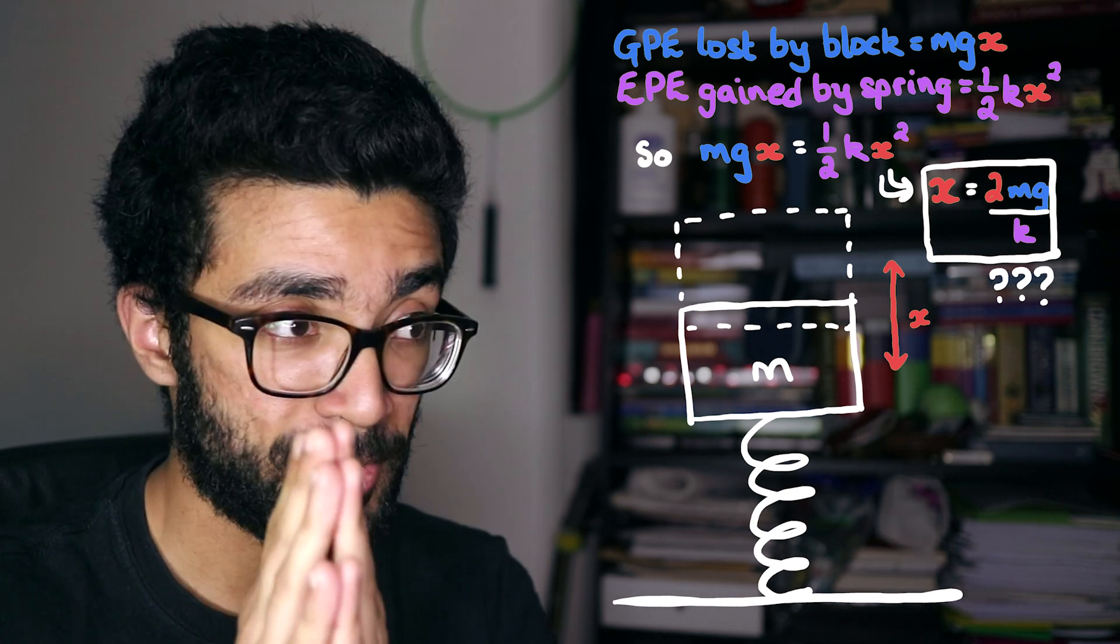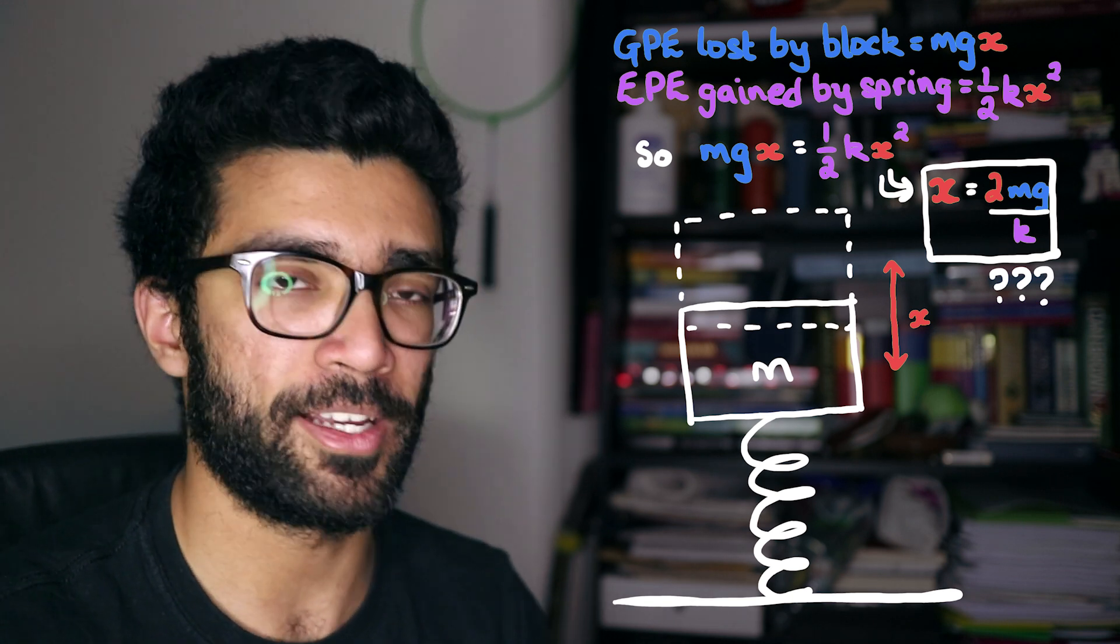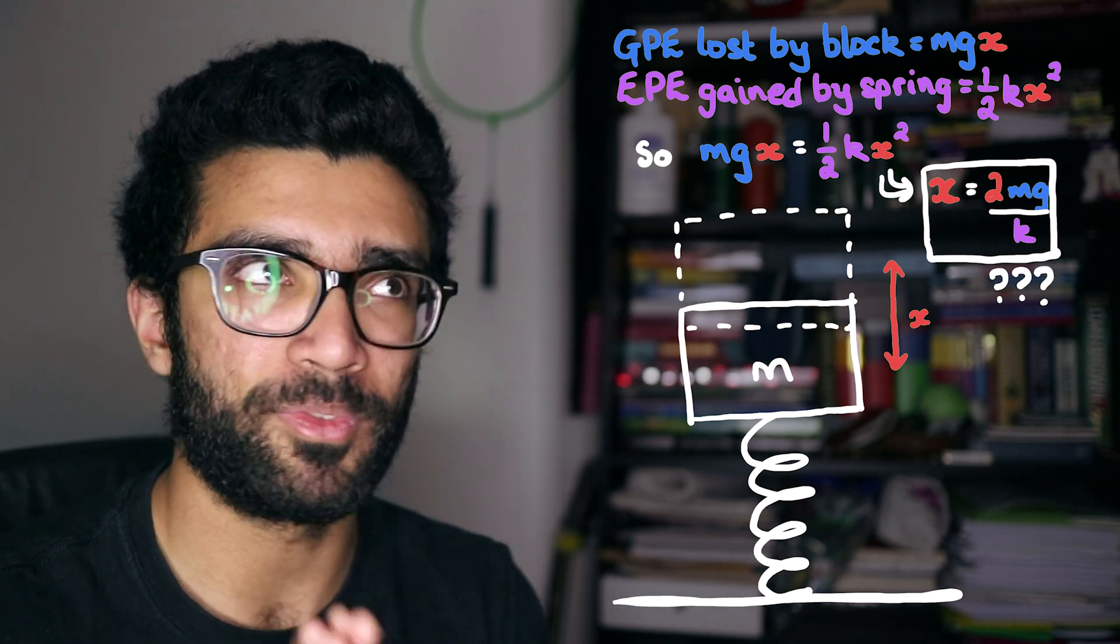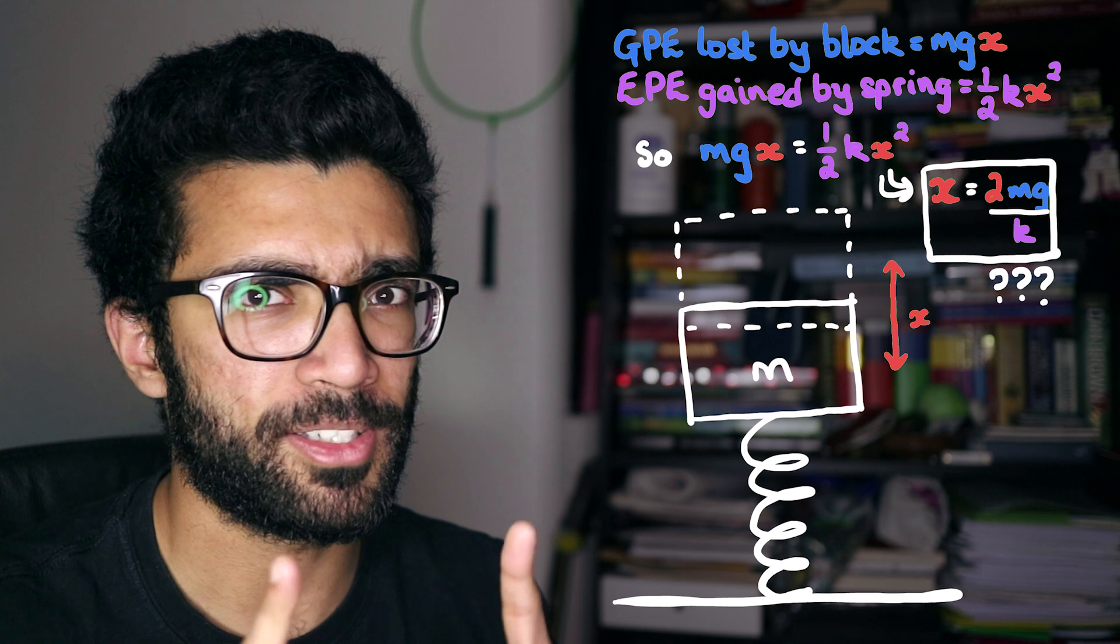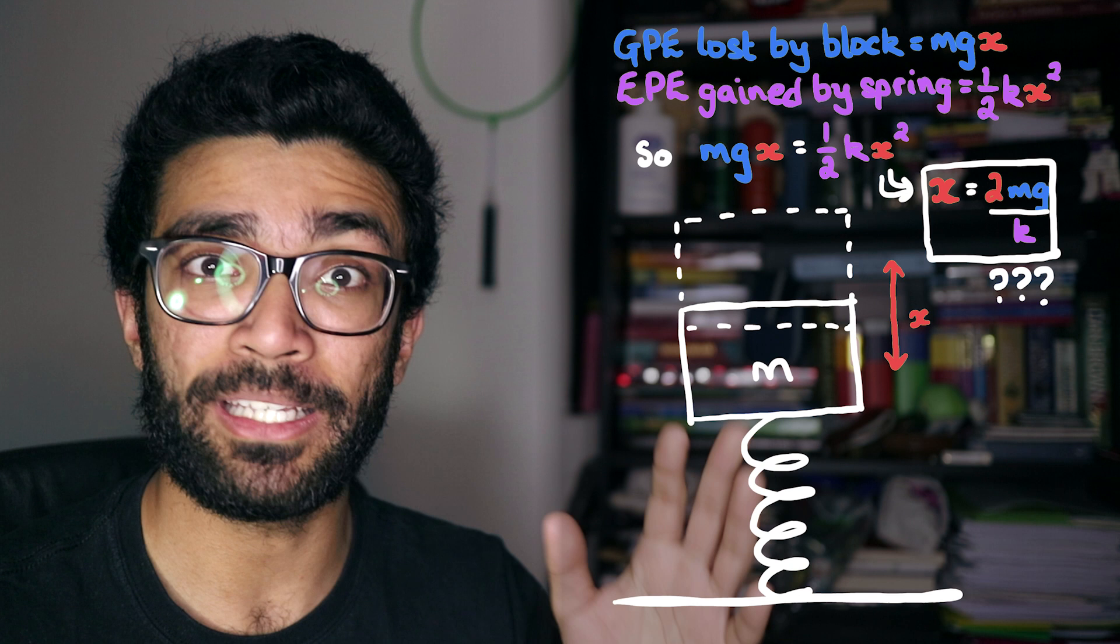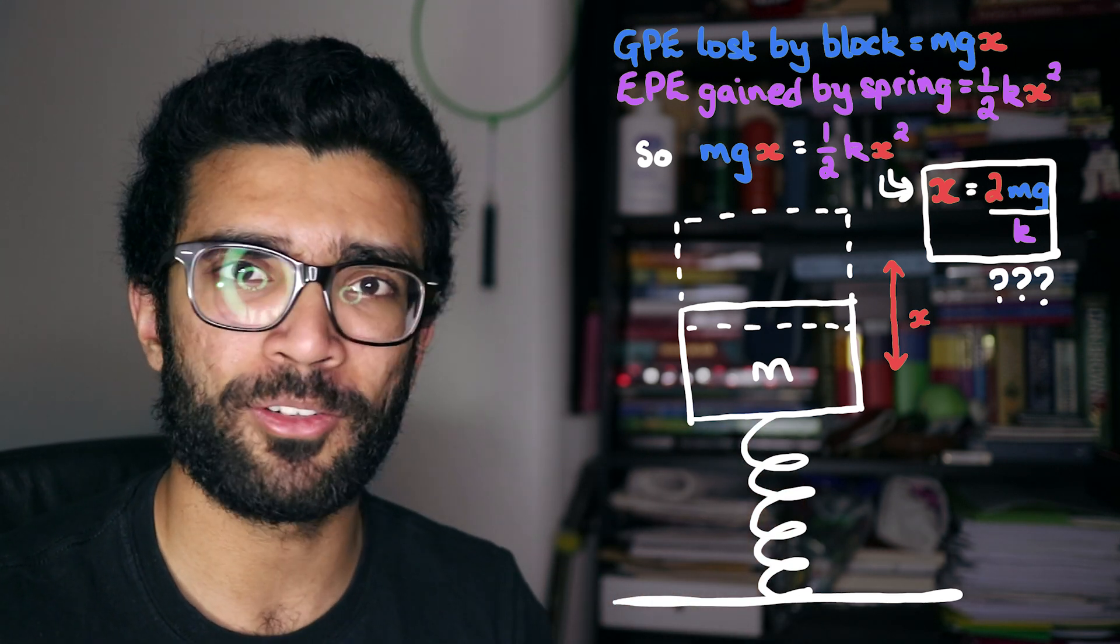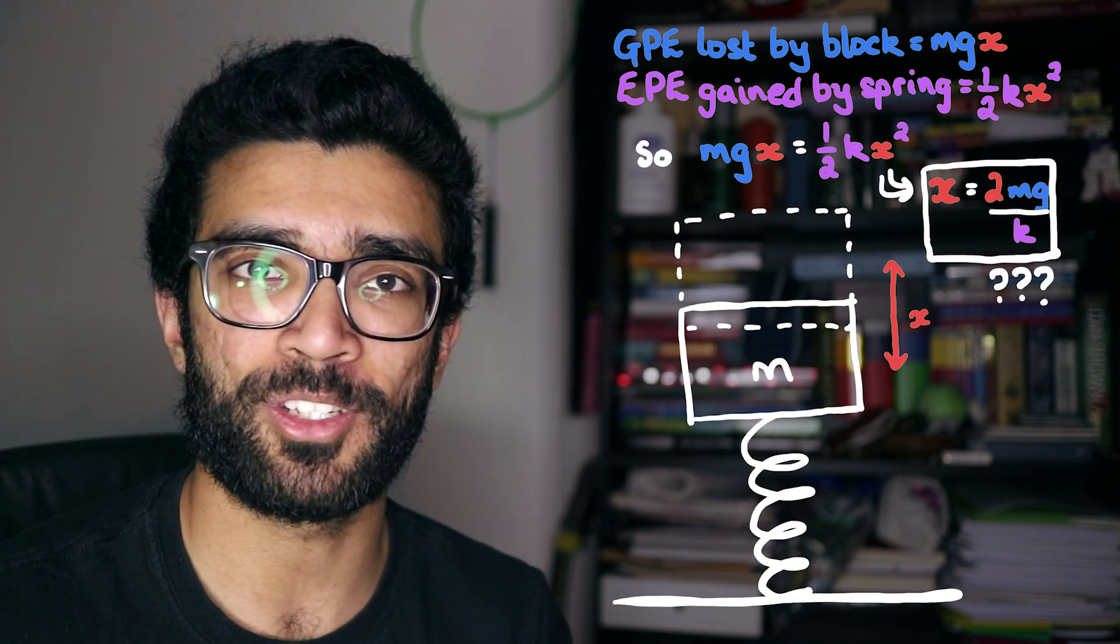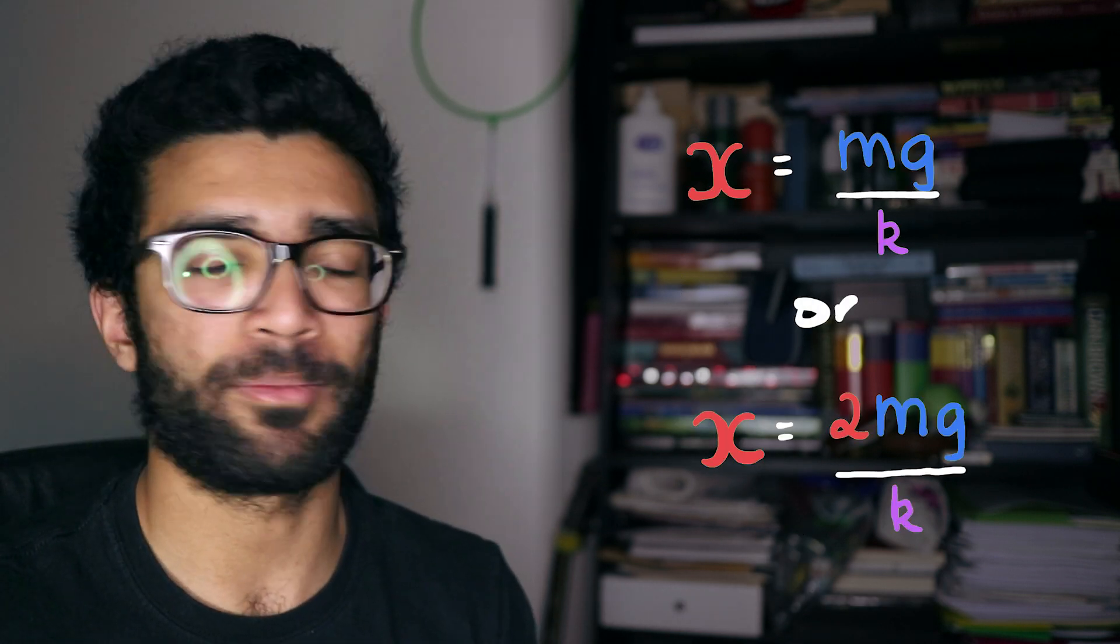so if we rearrange this equation and solve for the extension X, we find two possible situations. One of them is the boring one, X is equal to zero. In other words, the block doesn't move at all and the spring doesn't compress. Kind of dodgy, but the other one is really interesting. The other one ends up being, what does it end up being? I'm trying to do some maths in my head. Hopefully this is right. The other one ends up telling us that the compression of the spring must be 2 multiplied by Mg divided by K. So this is twice the value that we found when we used the forces method. So what gives? What should the compression of the spring actually be? Should it be Mg over K or should it be 2mg over K? Or should it be something else entirely?